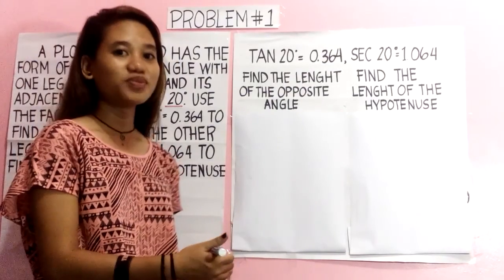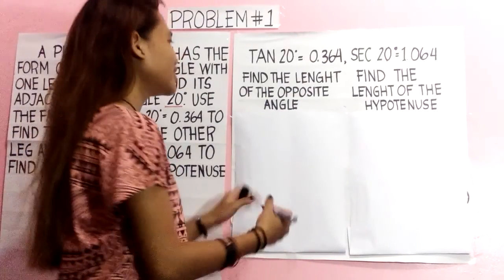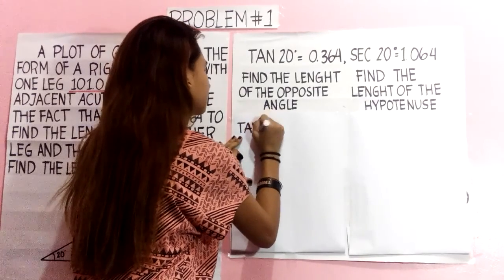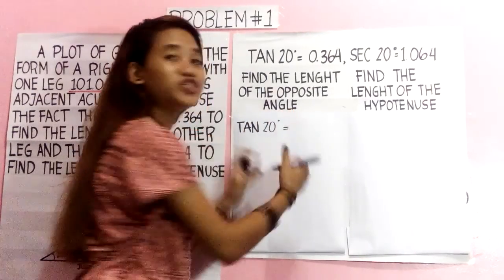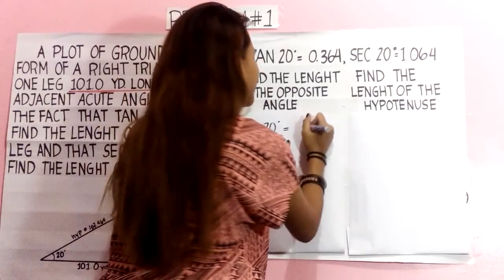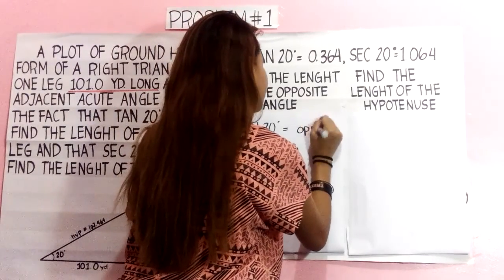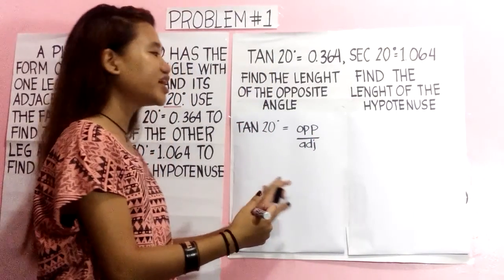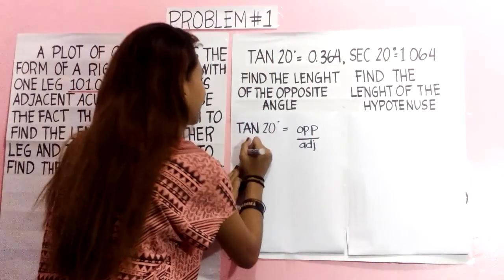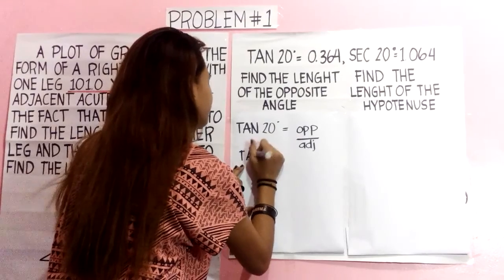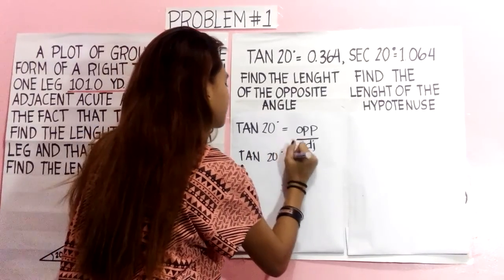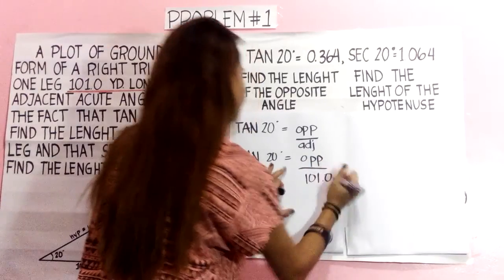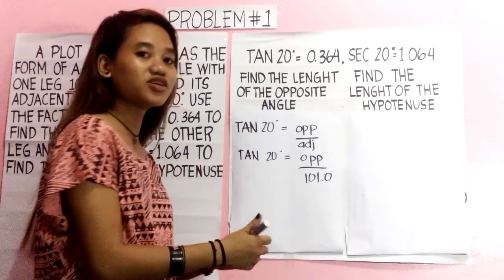To find the length of the opposite side, we will use tan 20 degrees, which is opposite over adjacent. We will substitute the value of the adjacent and then cross multiply.